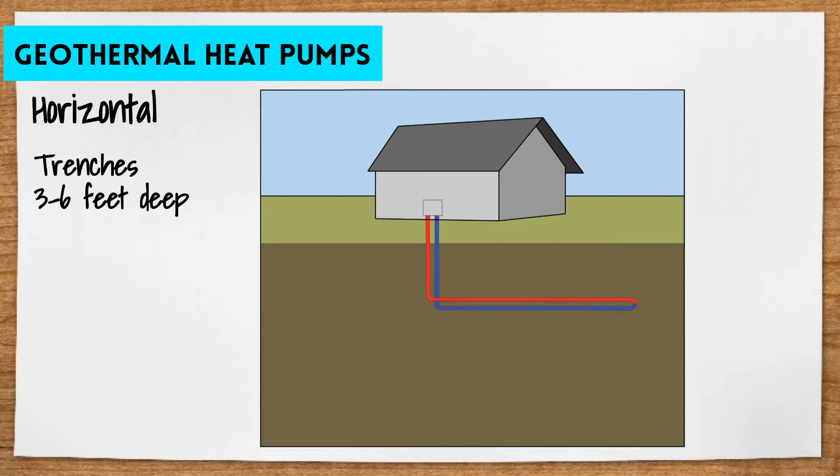In order to fit more piping into a trench, a slinky looped pipe can be used. The trenches can be put beneath lawns or parking lots.